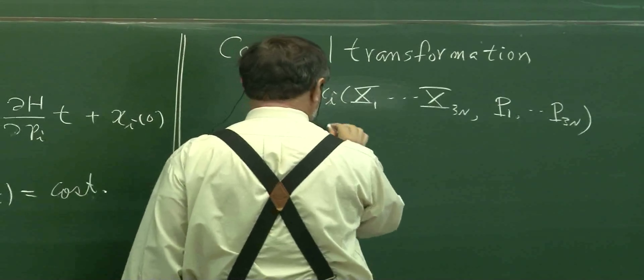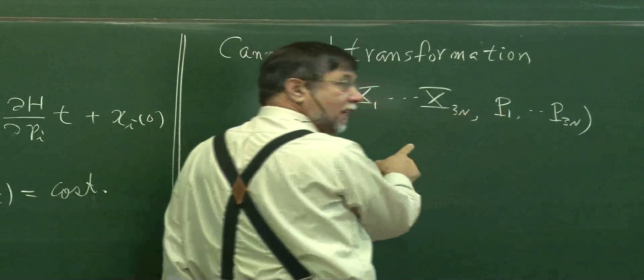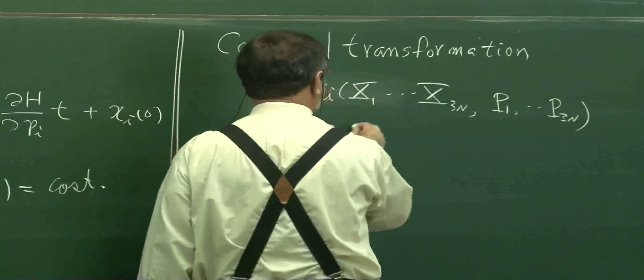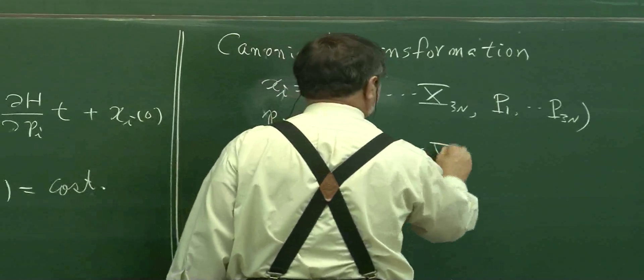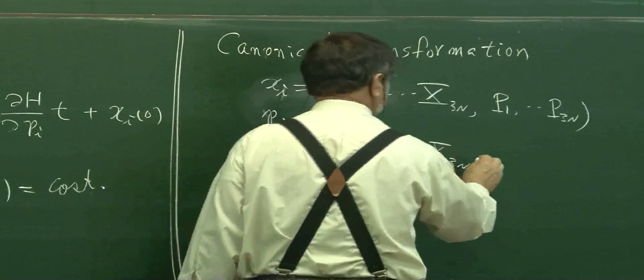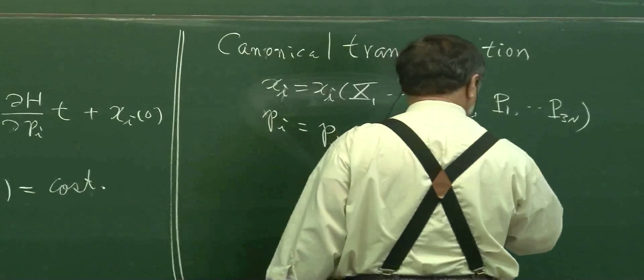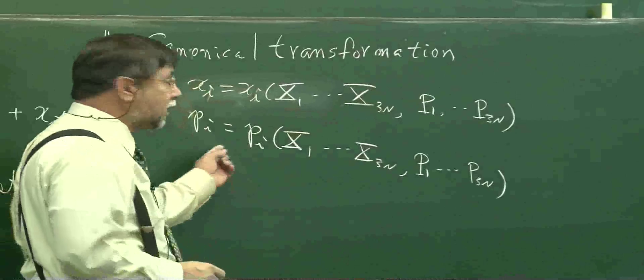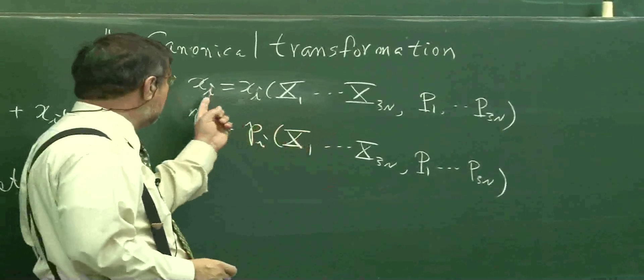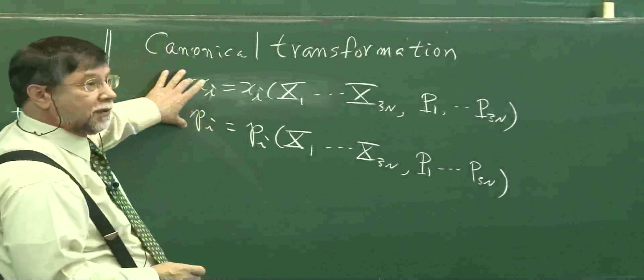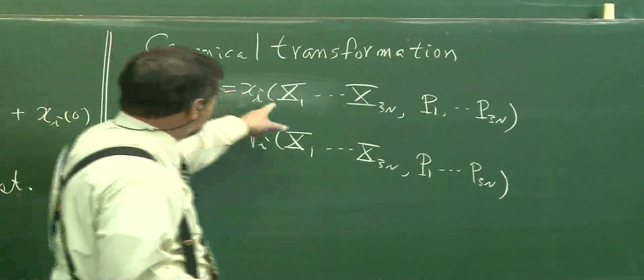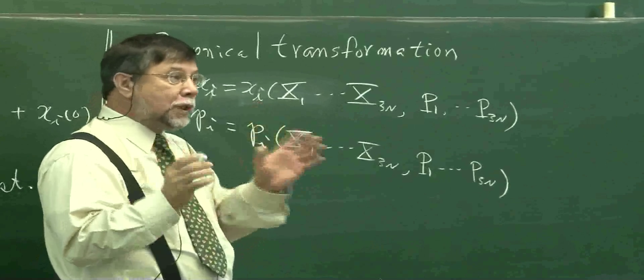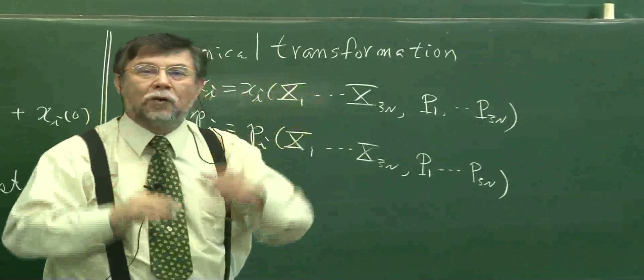Let's suppose there is a new set of variables which is related to the function. We don't know yet which kind of function, but anyway, there is a 3N set of variables, and this is also 3N sets of variables. But we insist on one condition.